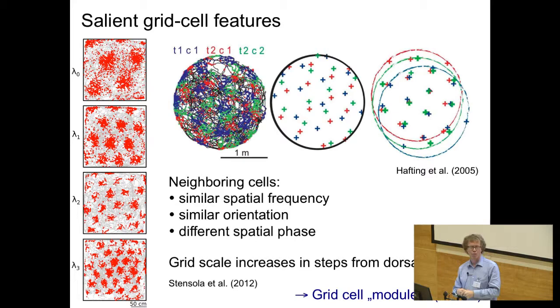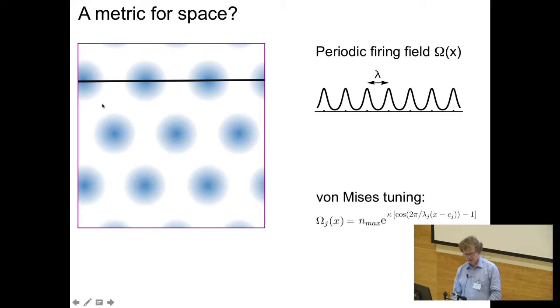The prize was given to the Mosers because it was argued this constitutes a metric for space. Let me show you how the argument goes. If an animal runs along this line, neurons will fire here, again here, and once again over there. By measuring when they fire, you'll know how far the animal has advanced. For later use, I'll describe these firing fields by periodic generalizations of Gaussians - von Mises tuning curves. These are cosine waves in the exponent of an exponential function. That's a pretty good characterization of the specifics of these tuning curves.